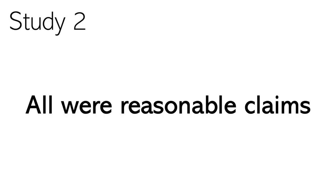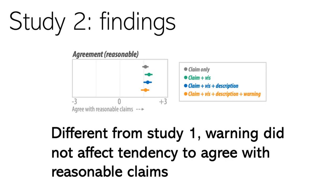After Study 1, we also conducted Study 2. Study 2 was the same as Study 1. However, instead of seeing causal claims with different levels of plausibility, in Study 2, participants only saw reasonable causal claims. In Study 1, we found that the warning message made people more cautious in accepting some causal claims. But in Study 2, we were not able to see any effects. The warning message did not make participants more cautious in accepting the claims.